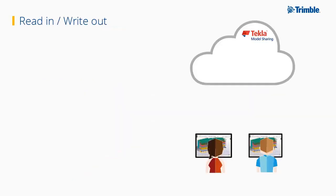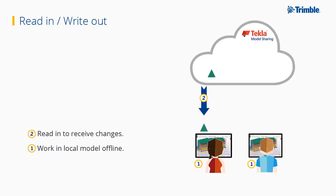So, how does it work in practice? In this example, we have two users, Olivia and Noah, working on the same Tekla Structures model with each other and other project members. First, both users work with their local models offline. Next, Olivia does a read-in to receive changes from other users, and then writes out to share her changes. At this point, Olivia's local model is up to date, and her latest work is available in the cloud for others to read in.